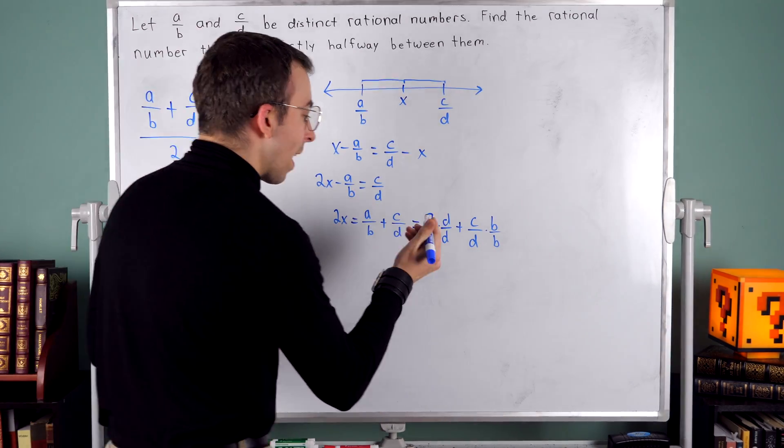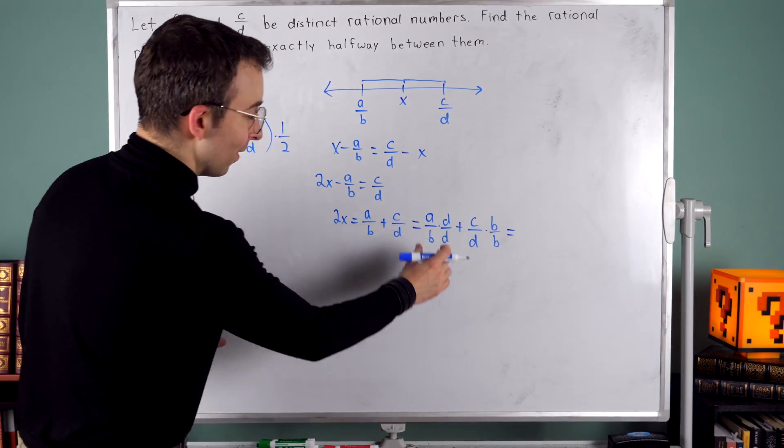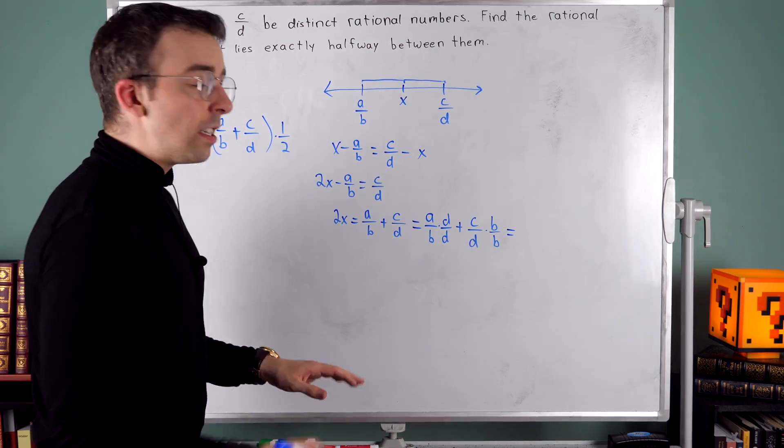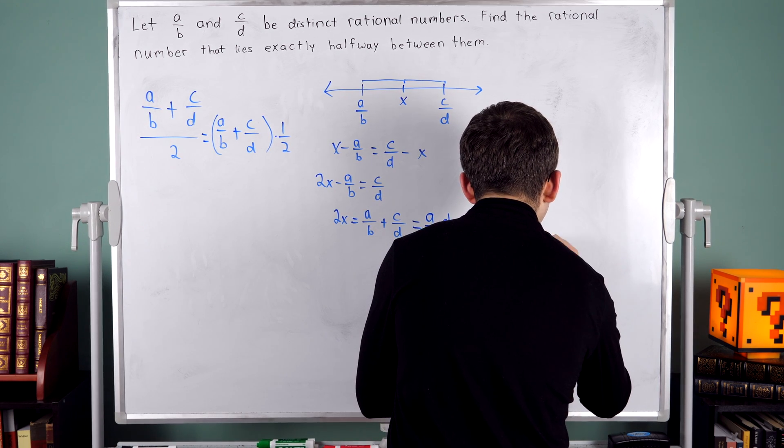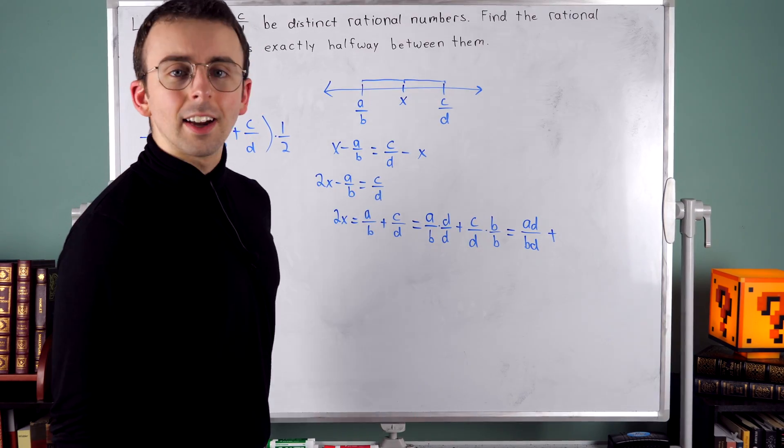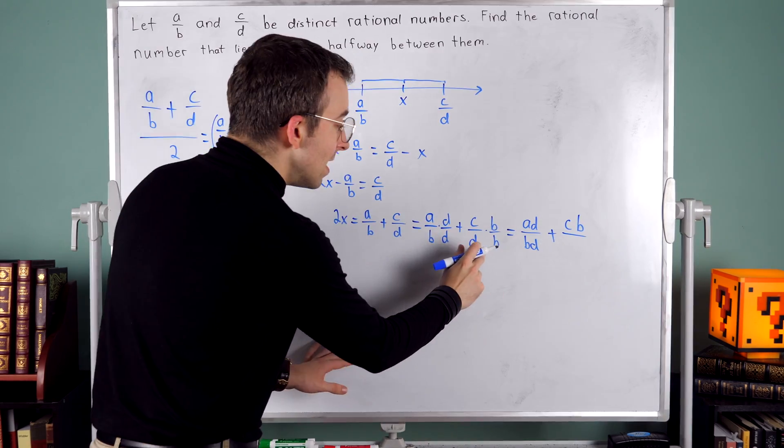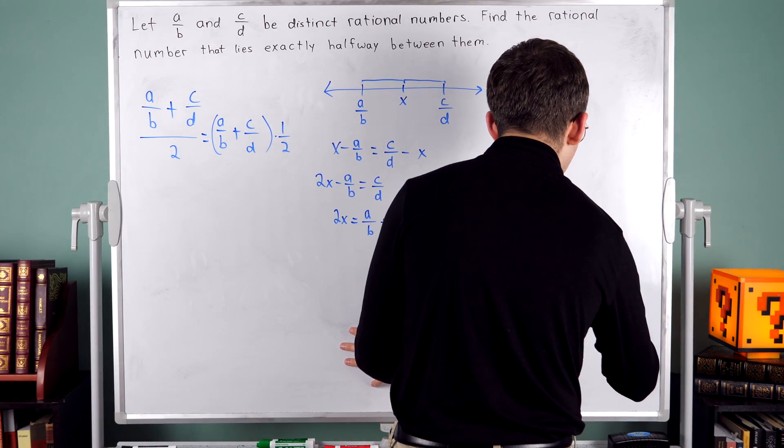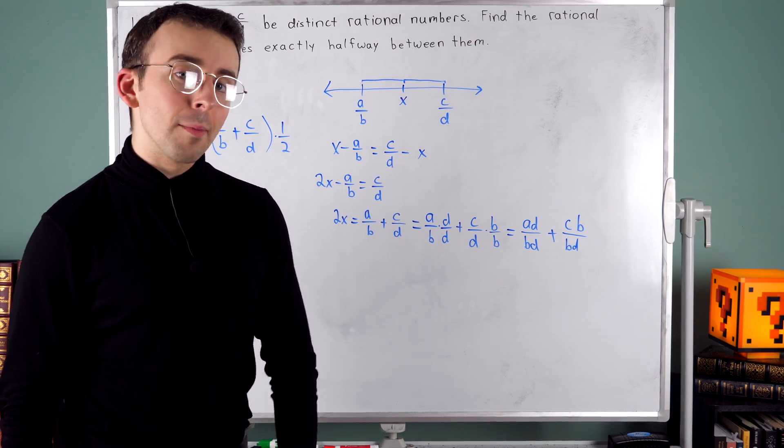Now we've just got some fraction multiplication to do, which is like the easiest thing to do with fractions. On the left, I've got A over B times D over D. So that's A D over B D. That's being added to C times B over D times B. So let's write that C B over D B. Order of multiplication doesn't matter. So instead of D B, I'm going to write B D just so it matches the other denominator.